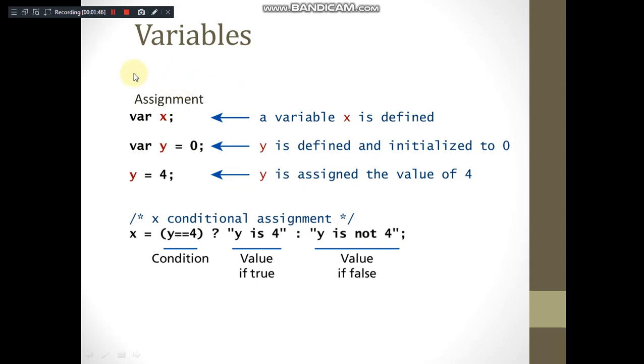We will see some examples to know about the syntax of the variables. You can just have a look at the first statement: var x, where we are declaring variable x where its data type is not decided. Based on what value we assign to it, its data type is decided. In this second example, you can observe it is defined and also assigned with the value of 0, so initialized to 0.